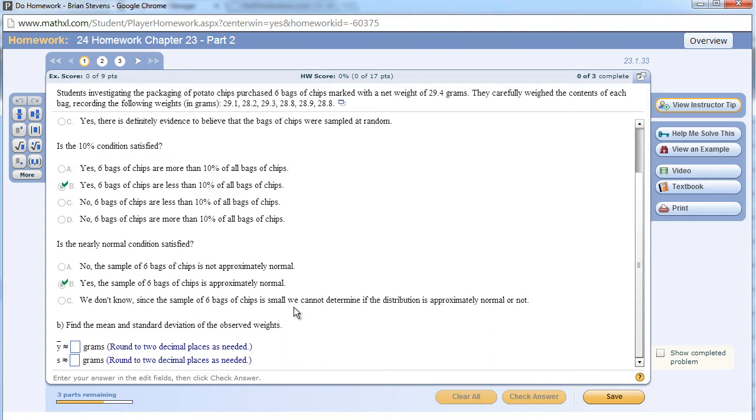Now go to stat, calc, one var stats, and you want right here the list L1, and you do not want a frequency list. One var stats will give you the univariate statistics. So the mean of variable y is 28.85, and the standard deviation is equal to, and very careful, we want the sample standard deviation. This is S sub X on your calculator.